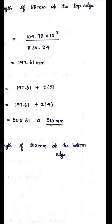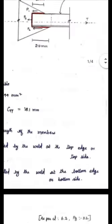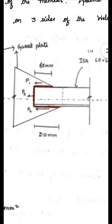The problem is now complete. Draw the figure and mark the weld lengths: top edge — 65 mm, end (transverse) — 65 mm, bottom edge — 210 mm. Provide a 4 mm fillet weld at all three sides.